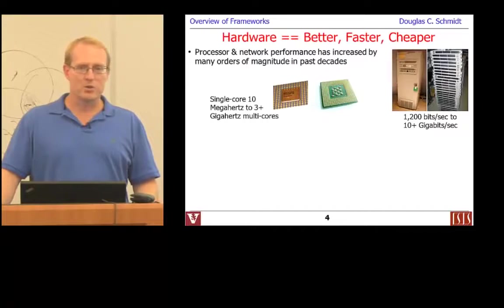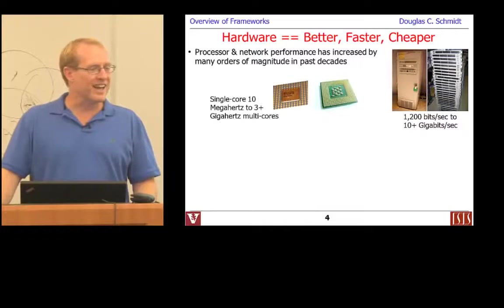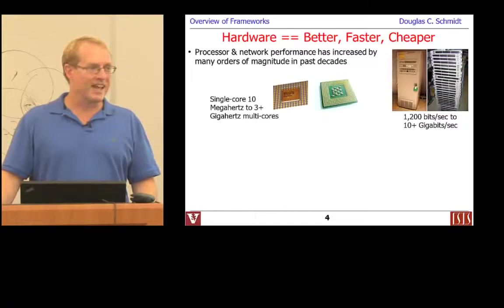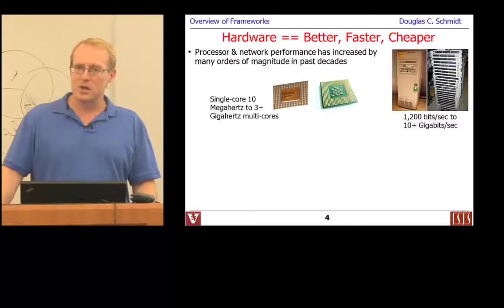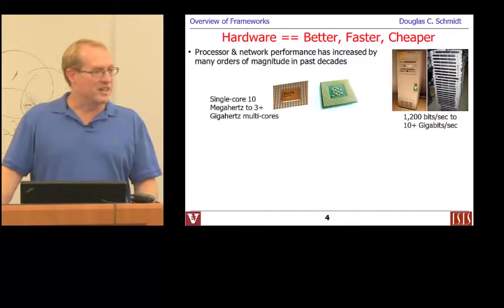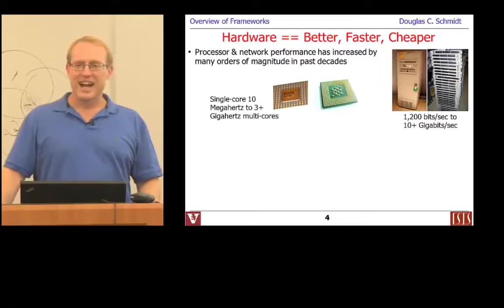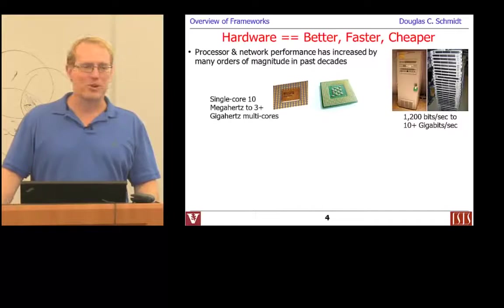If you step back and look at the computing field over the past three or four decades, there are some interesting trends. When I first started out as a software grad student back in the mid-80s, fast meant 25 megahertz computers — that was sort of the high end at the time. Nowadays we're up in the gigahertz ranges. Similarly, when I first accessed networking resources as a grad student, we were really happy with 2400 baud modems, compared to the 1200 baud modems we started with. Things have obviously gotten way faster.